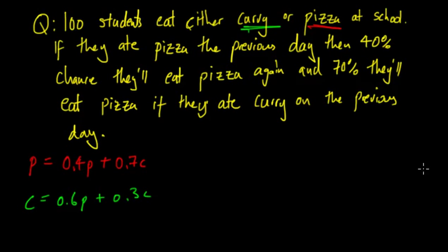Now we also know that pizza plus curry must equal 100, 100 students, and that's because we're looking at the people here, so that's 100 students, that's where that comes from. Now if it was probabilities you would just let it equal 1, and we'll show that in a sec, but we'll finish this example first.